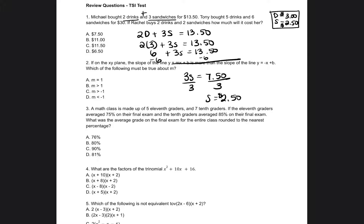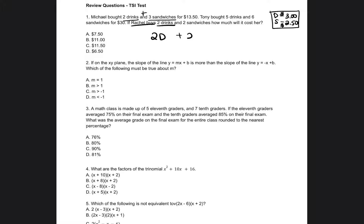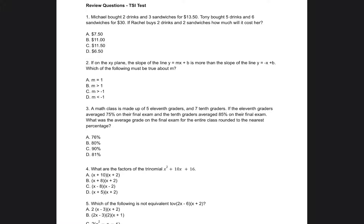Now I know how much drinks and sandwiches cost. Rachel is going to buy 2 drinks and 2 sandwiches, so that's 2 times $3 plus 2 times $2.50. 2 times 3 is 6, plus 5 equals $11 total. The answer is B. If you got B, great job! If you didn't get B and need extra practice, check out some of my other TSI test prep videos for similar practice problems.